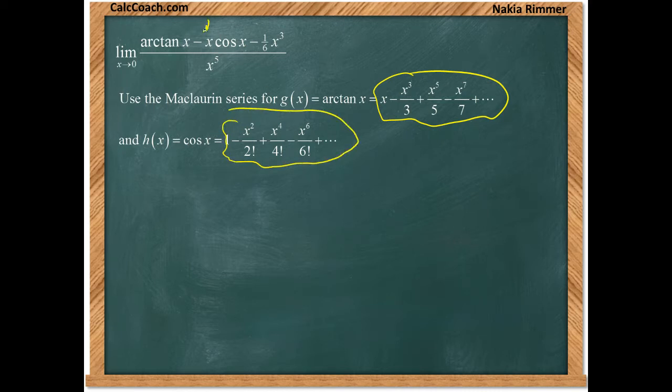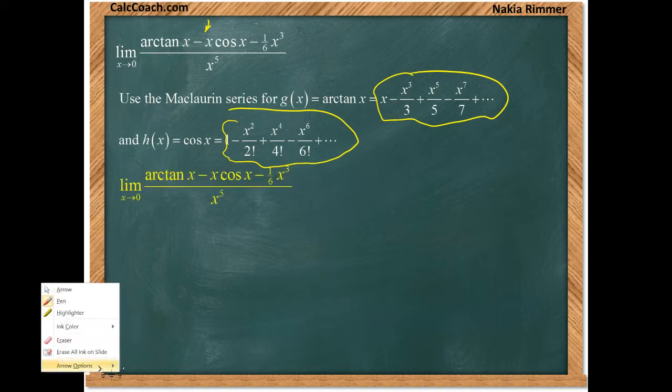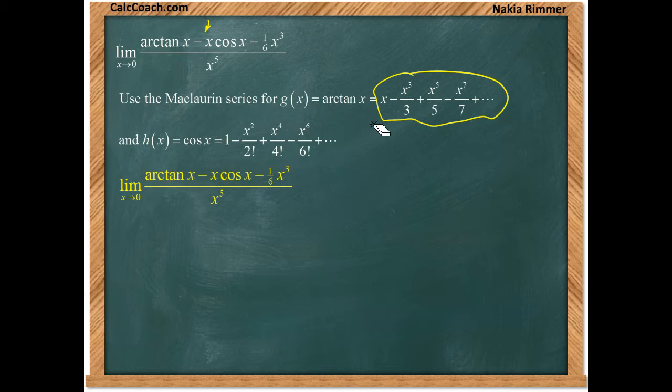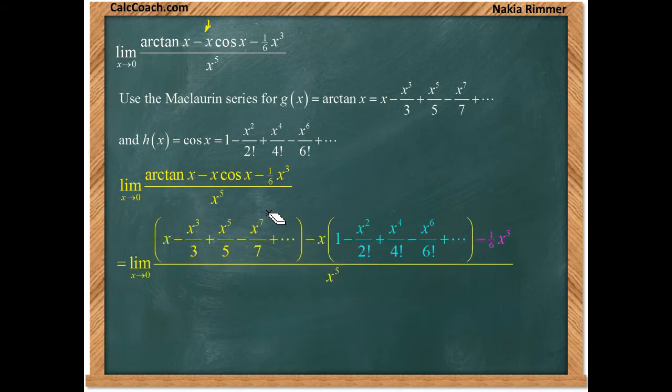Don't forget that cosine gets multiplied by a negative x. So it's our job to find what this power series is going to be. Replace arctan x with its power series, the first few terms of it, and replace cosine x with its power series, the first few terms of it. I have them in different colors here so we can recognize where the terms are coming from.